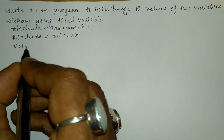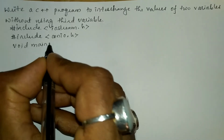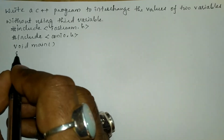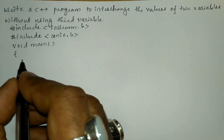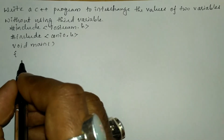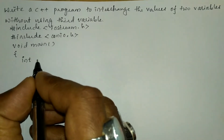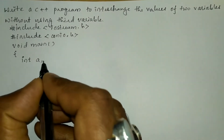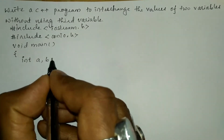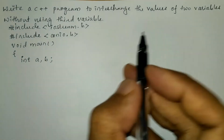Now let us write the void main function, curly open brace. In the declaration section we are going to declare two variables of type integer. So here I am going to write int a comma b and put semicolon.